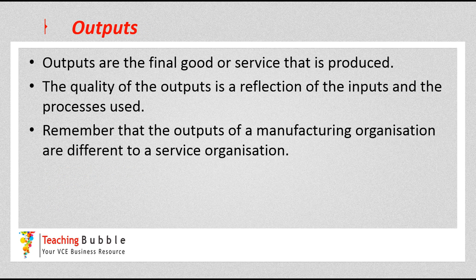Outputs are the final good or service that is produced, and the quality of the outputs is normally a reflection of the inputs and the processes that are used. If our objective is to produce a high quality output, there's not much we can do at the output stage — it's a result of all the other factors that have gone before it. That's why it's really important to get our inputs and our processes right. Remember that outputs for manufacturing organizations are very different to service organizations, which was covered in the previous video.